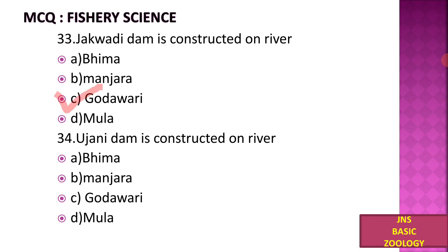Ujni Dam is constructed on river: A) Bhima, B) Manzara, C) Godavari, D) Moola. The Ujni Dam is also one of the largest freshwater reservoirs in Maharashtra. It is also called the Bhima Dam and is constructed on the river Bhima.